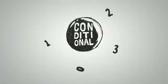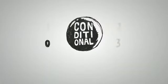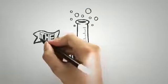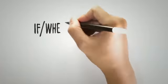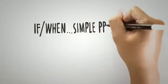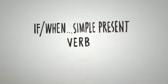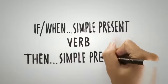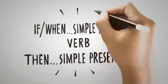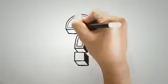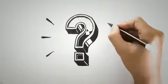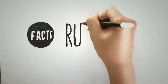The formula is: if or when plus simple present verb, then simple present verb. But what is it used for, you ask? You use zero conditionals to express facts, rules, and things that are 100% true.